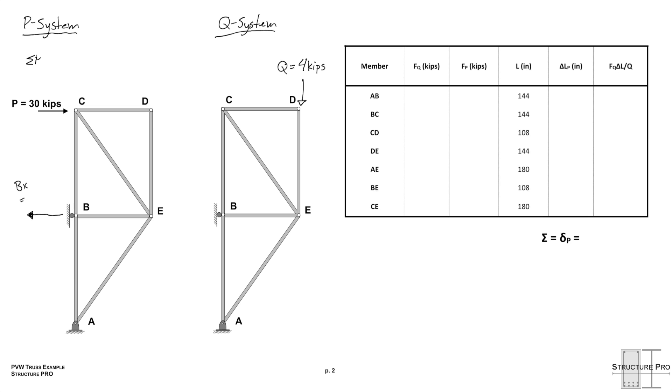We have our horizontal reaction at B, Bx. And if we sum all the moments about A, we see Bx is 30 times 24 over 12 is 60. 60 kips has to be double because it has half the moment arm. We'll just draw in our dimensions here.